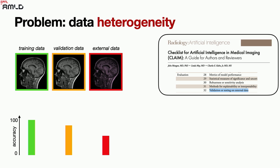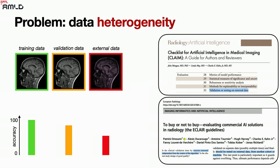This is well known in the field. In radiology there are guidelines — for example the CLAIM checklist — which asks whether the algorithm has been validated on external data. We're actually doing this at CHUV with fracture detection software, and we're seeing a big drop: some algorithms that claim to be very good are actually not as good as an ER physician. We also wrote the ECLAIR guidelines calling for exactly this external validation. If you're a physician looking to buy one of these algorithms, check whether a co-author is from the company that made the software — not necessarily a red flag, but let's say orange.